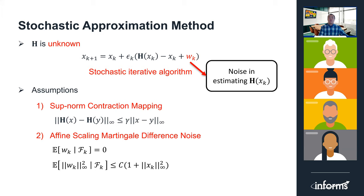Now suppose that we do not have an accurate oracle — our oracle is corrupted by noise so that for every x, it returns H(x) plus some noise w. Then the fixed-point iteration becomes the stochastic iterative algorithm: x_{k+1} = x_k + ε_k · (H(x_k) − x_k + w_k). This is the stochastic approximation algorithm we are going to study. We make two assumptions: one is that the operator H is a contraction with respect to the supremum norm, which is of special interest because the Bellman's operator in reinforcement learning is a contraction with respect to the sup-norm. The second assumption is that the noise sequence is unbiased conditioned on the past, and its conditional variance grows at most affinely in terms of the current iterates.